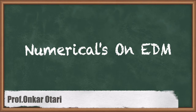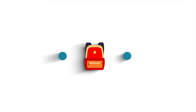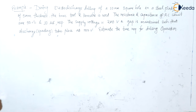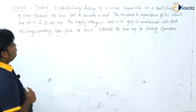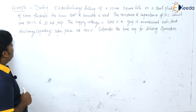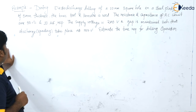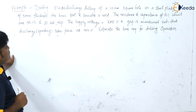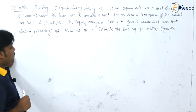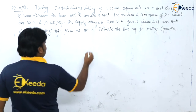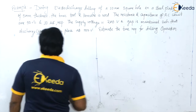Welcome students. In this video we are going to see some numericals on electro discharge machining. Let us take the first problem: during the electro discharge drilling of a 10 mm square hole in a steel plate of 5 mm thickness, brass tool and kerosene as dielectric fluid are used. The resistance and capacitance of the RC circuit are 50 ohm and 10 microfarad respectively. The supply voltage is 200 volt and the gap is maintained such that sparking takes place at 150 volt. Estimate the time required for the drilling operation.